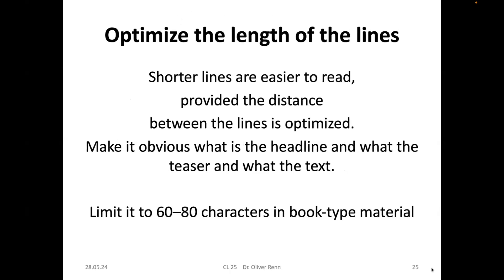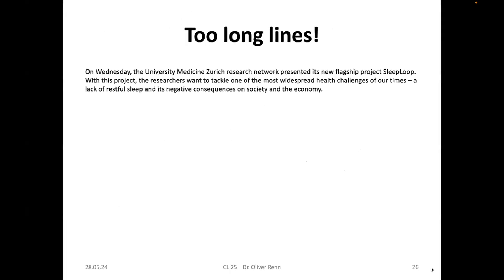As mentioned before, the length of lines is important because shorter lines are easier to read. It also depends on the space between lines. As a rule of thumb, a limit of 60 to 80 characters per line in book or magazine material is ideal for reading.